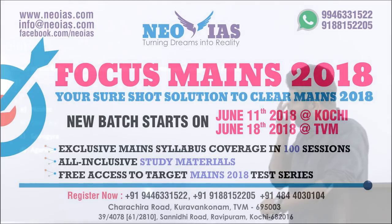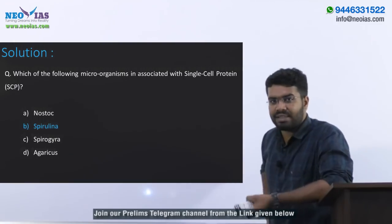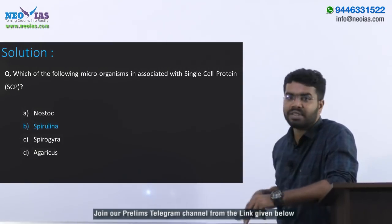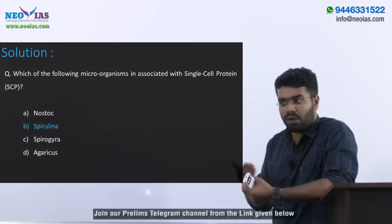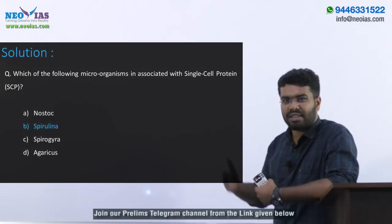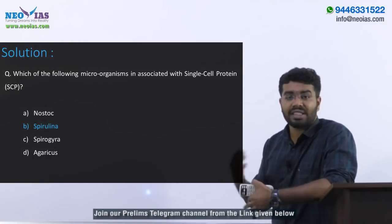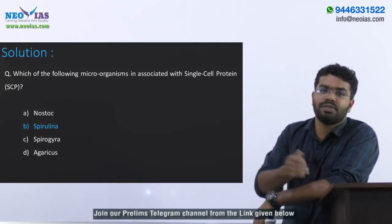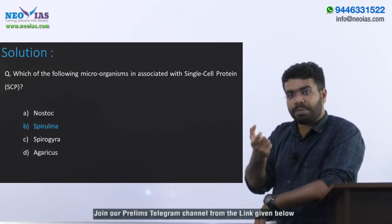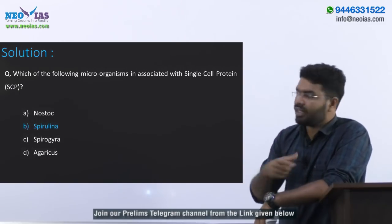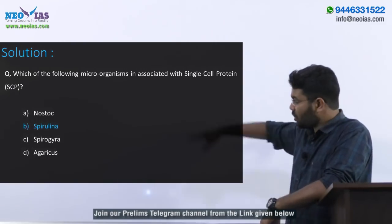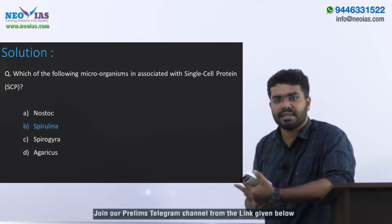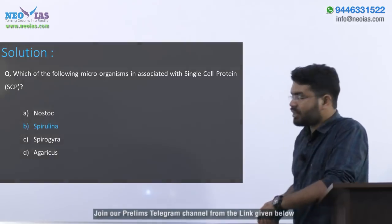Solving the question, Spirulina (option B) is the answer. This is a factual question. All the organisms given — Nostoc, Spirogyra, and Agaricus — are microorganisms that can be utilized in the food industry or as food supplements. But specifically, when single cell protein is asked, Spirulina is the answer. Nostoc, Spirogyra, and Agaricus relate to different categories like mushrooms, algae, and gelatin respectively, but Spirulina is the answer here.